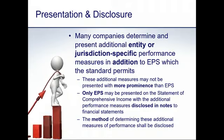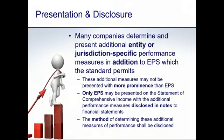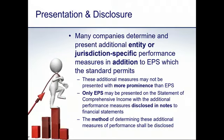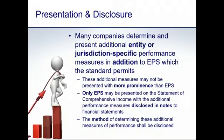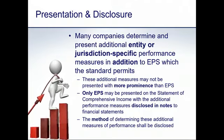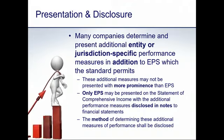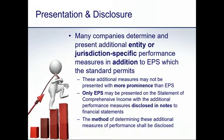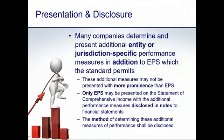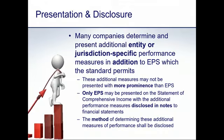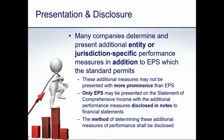Companies that present earnings per share are also allowed to present additional entity-specific or jurisdiction-specific performance figures. For example, in South Africa, listed companies are required by the Johannesburg Stock Exchange listing rules to present a figure called headline earnings per share, calculated by making certain mandated adjustments to EPS as set out in a circular issued by the JSE.